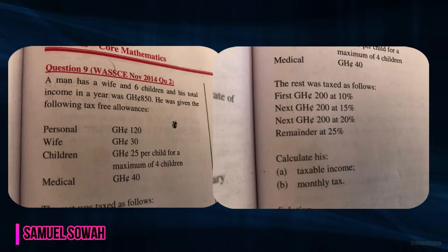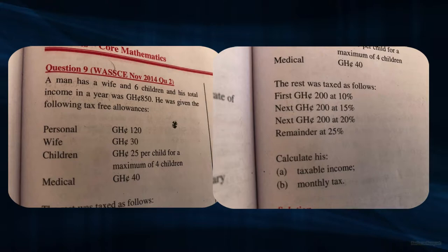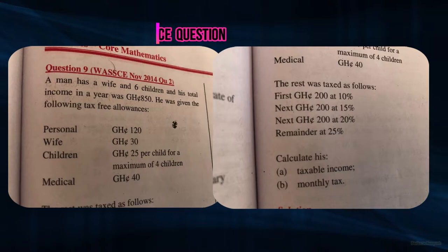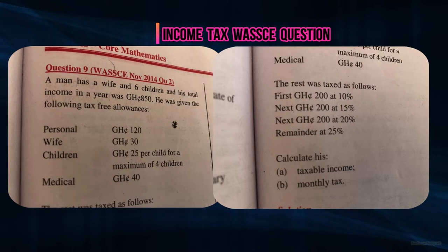Let's pick an example. A man has a wife and six children and his total annual income was 850 Ghana cedis. He was given the following tax-free allowances: personal 120 Ghana, wife 30 Ghana, children 25 Ghana per child for a maximum of four children, medical 40 Ghana. The rest was taxed as follows: first 200 Ghana cedis at 10%, next 200 at 15%, next 200 at 20%, remainder at 25%. Calculate (a) his taxable income and (b) his monthly tax.